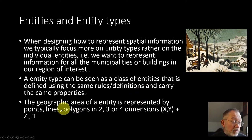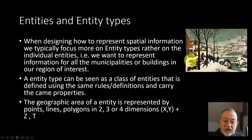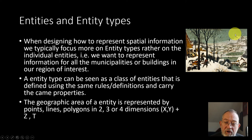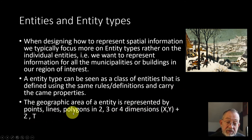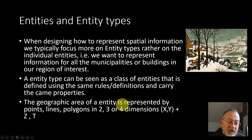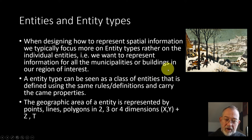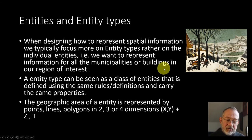These entities are typically represented as points, lines, or polygons in two, three, or four dimensions. Two dimensions is X and Y — latitude and longitude. The third dimension is typically elevation, so a bird might be at 30 meters or a mountain at 100 or 200 meters. We also use T for time — at one time a person is here, and at a later time they might have moved. So our data is typically represented in two, three, or four dimensions. Most of our visualizations will only be in two dimensions — a printed map or screen visualization — but the stored spatial information can be in two, three, or four dimensions.